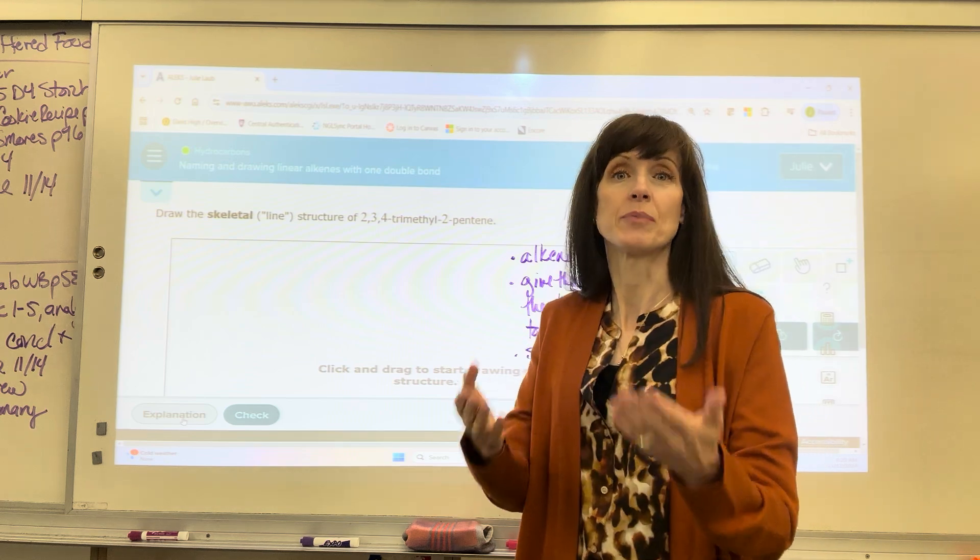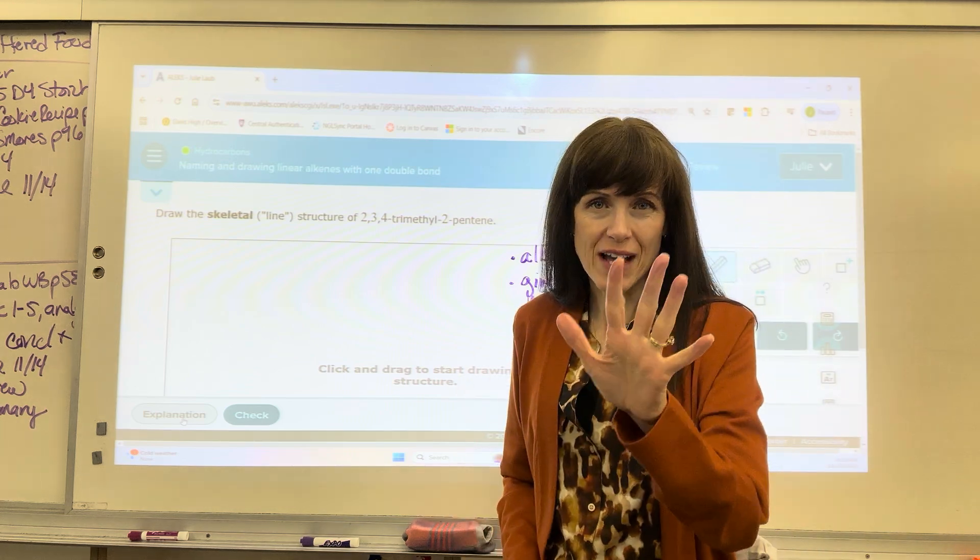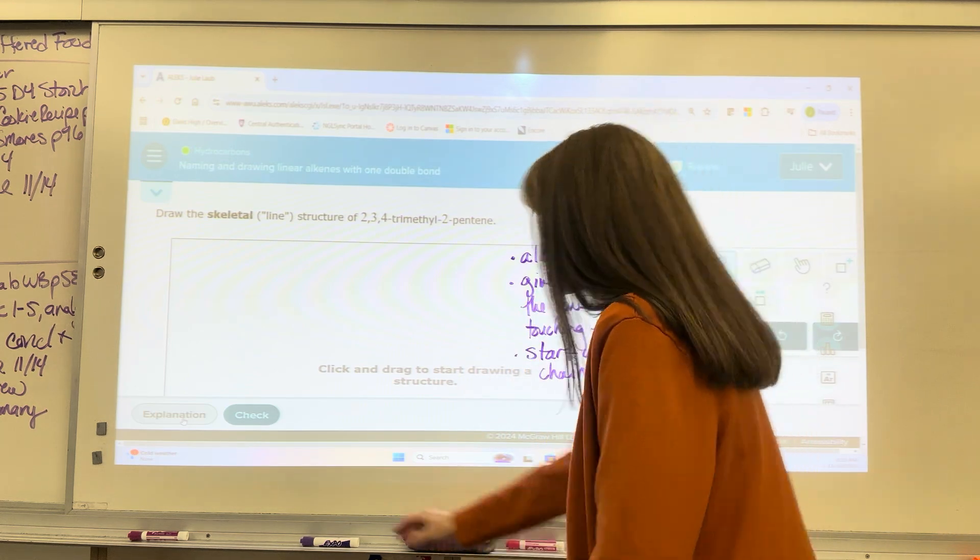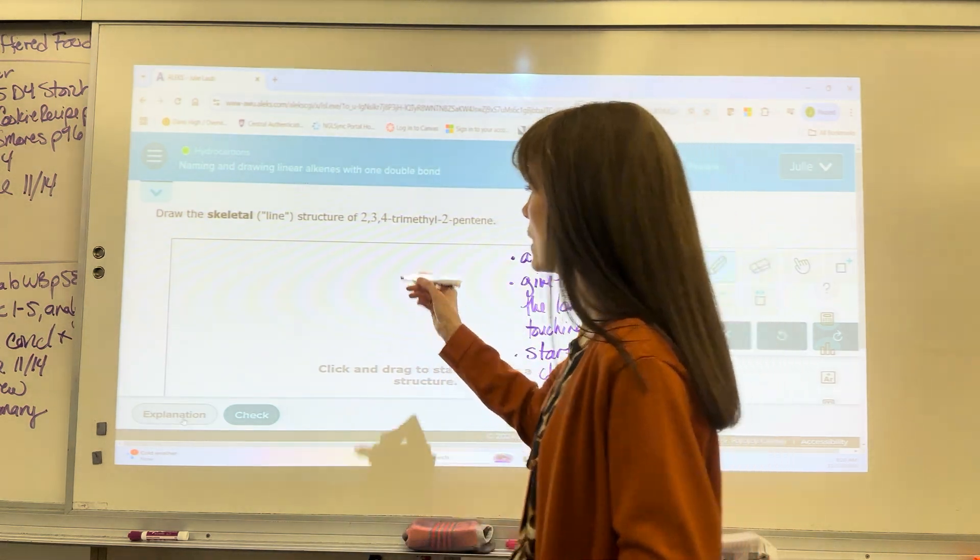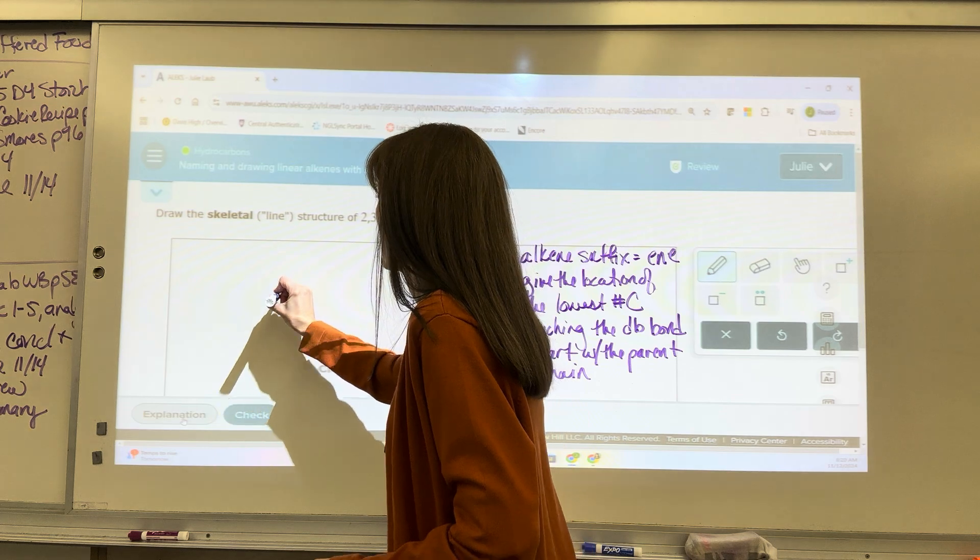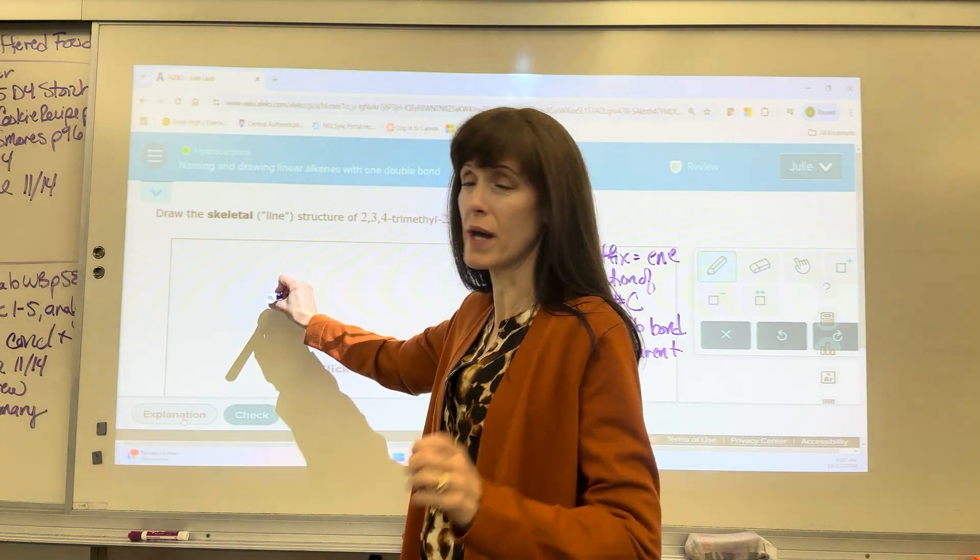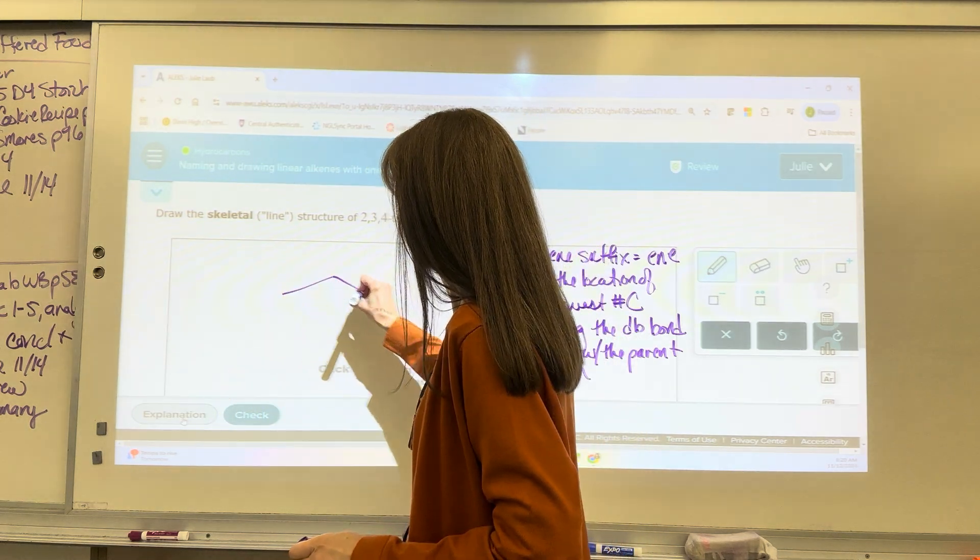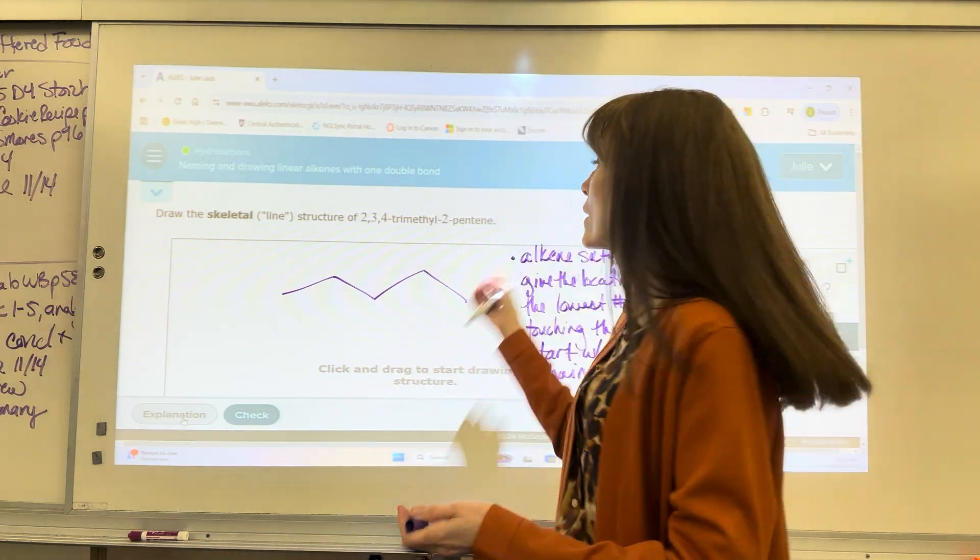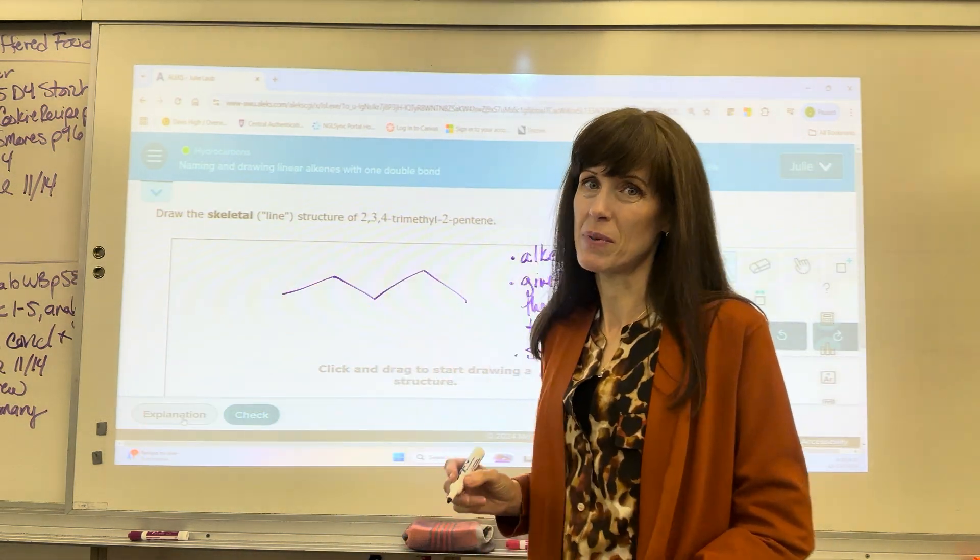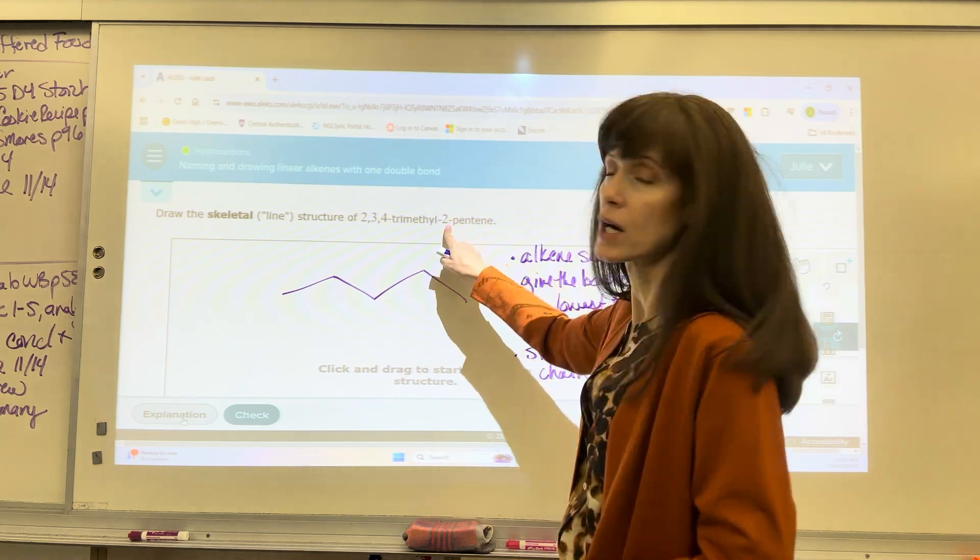Draw a skeletal structure of 2-3-4-trimethyl-2-pentene. So I start with the parent chain. Pentene, five carbons. Pent is five. So I do my skeletal structure with five carbons. Remember when I touch my pencil to the paper, marker to the board, that's carbon one. One, two, three, four, five. Then I work backwards. I do the double bond next. So this is on carbon two.